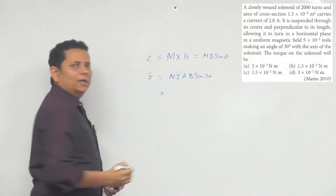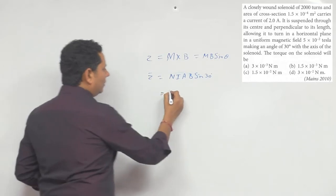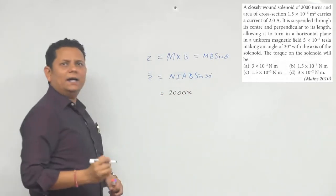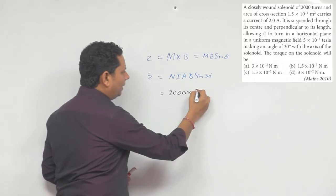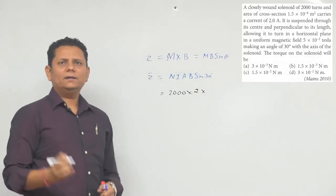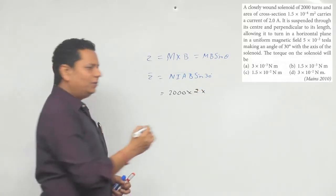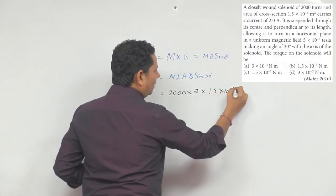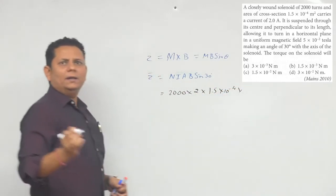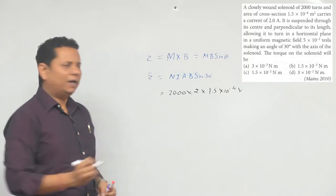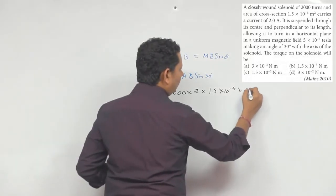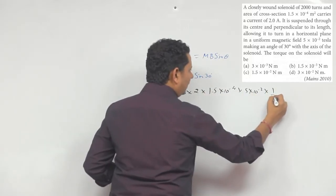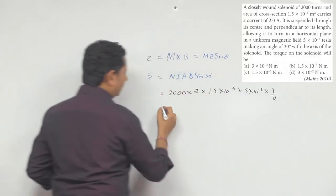The number of turns N given is 2000, multiplied by current I which is 2 ampere, multiplied by area A which is 1.5×10⁻⁴ m², multiplied by B whose value is given as 5×10⁻² tesla, multiplied by sin 30° which equals 1/2.